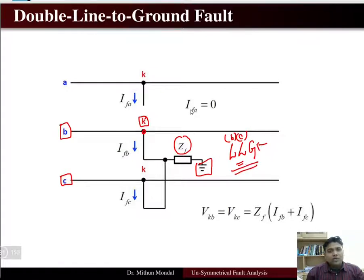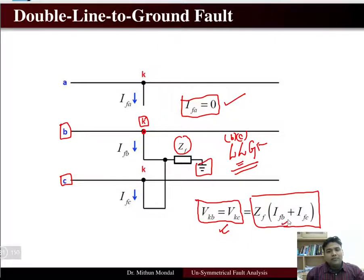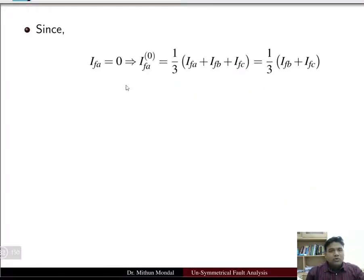Since phase a is not associated with the fault, the current in phase a due to the fault is zero. The voltages of the fault bus k in phase b and c are equal, which is equal to Zf times the sum of the current in phase b and phase c. This is in accordance with KVL — the voltage drop in the bus, taking into account the sign convention for the current.